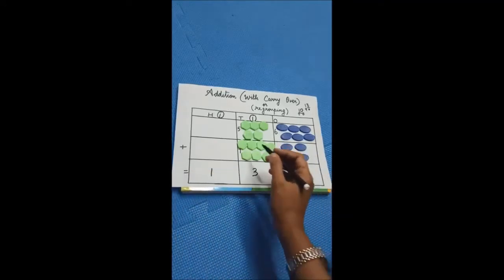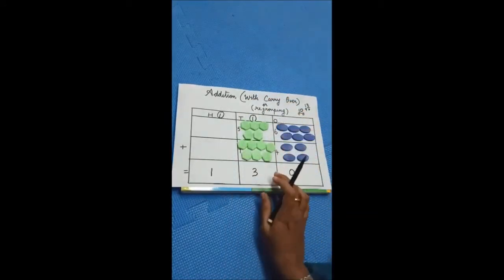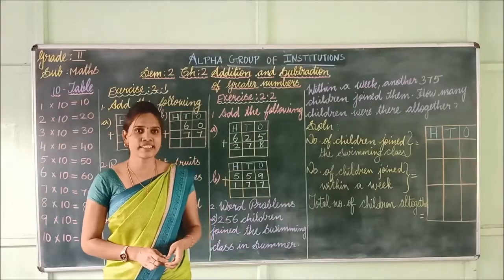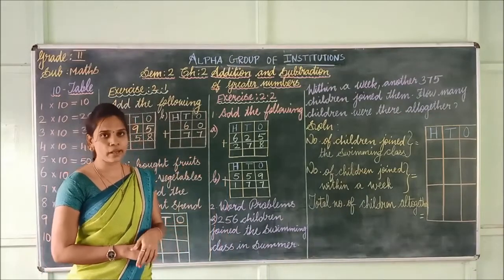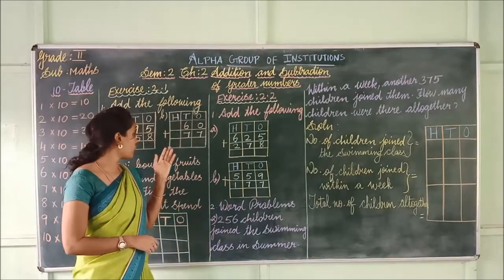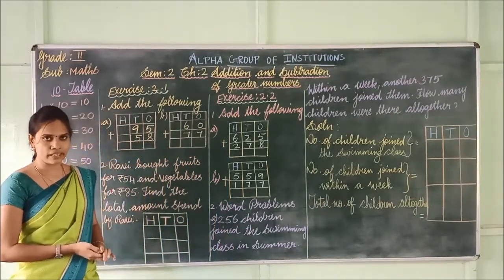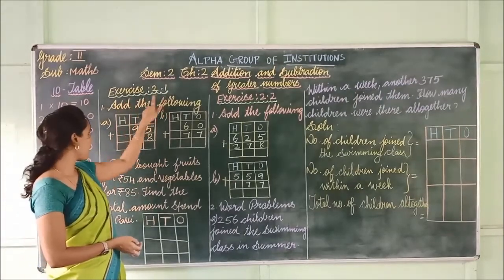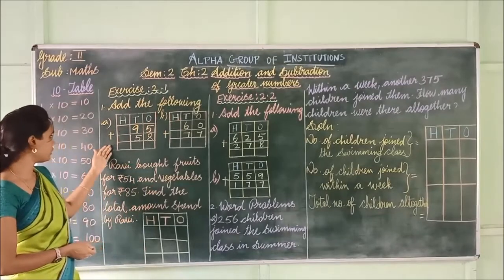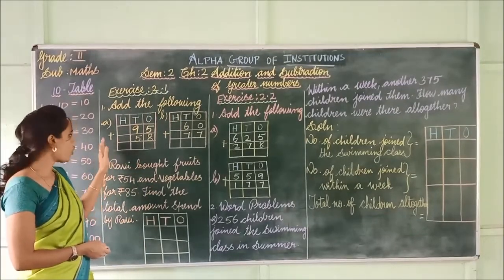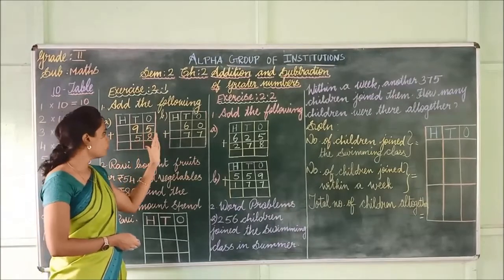This is addition with regrouping. Have you understood, children? Now we move on to the exercise for bigger numbers. Children, have you enjoyed the activity? We have seen addition for lower numbers. Now we are moving to greater numbers. See exercise 2.1. Here they have given the numbers and we have to add. Always we have to start from ones place.